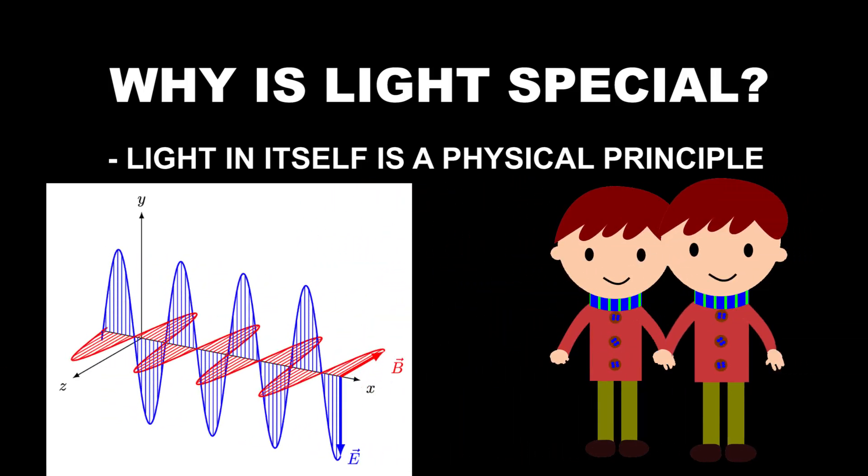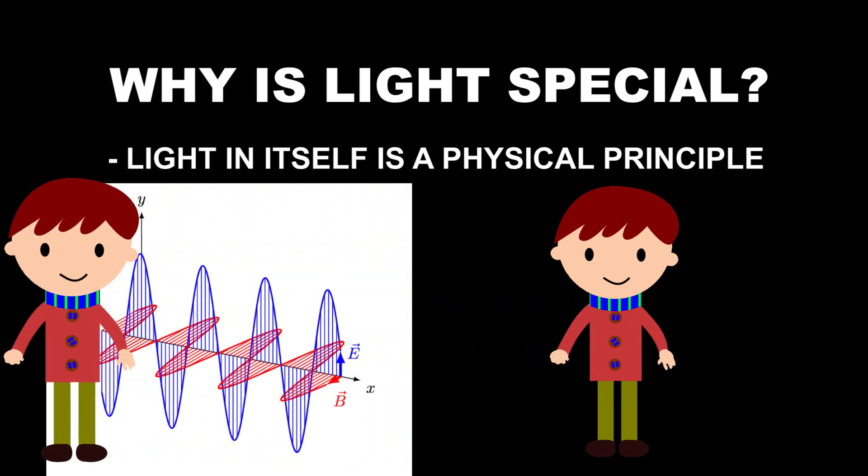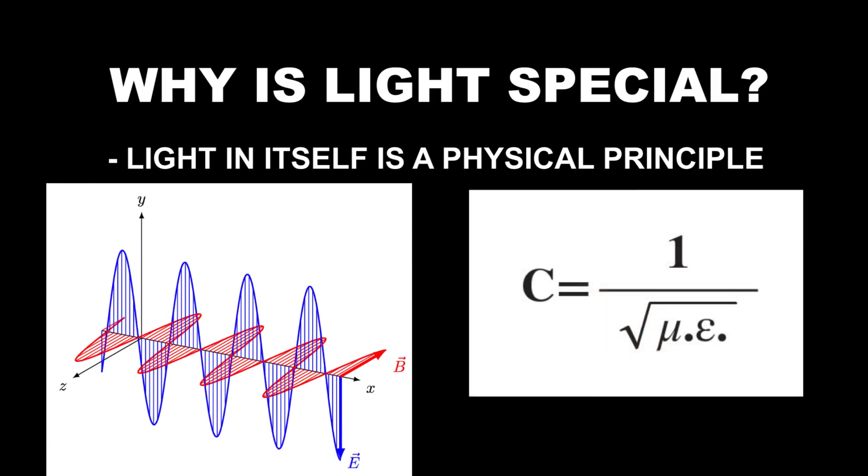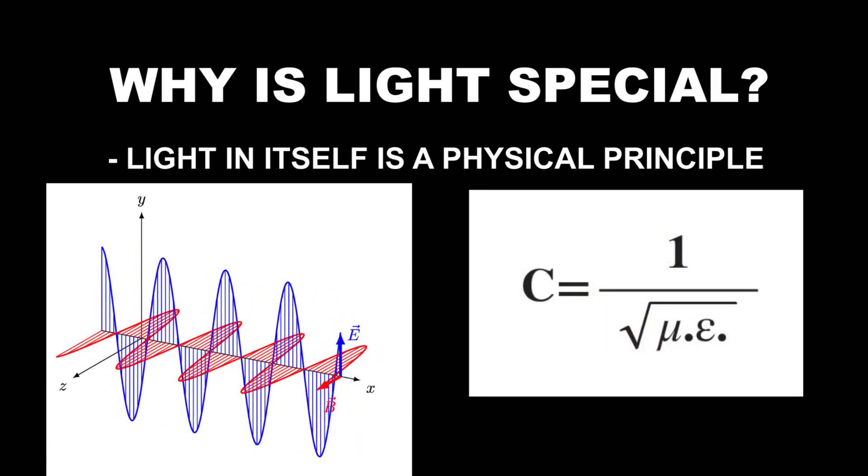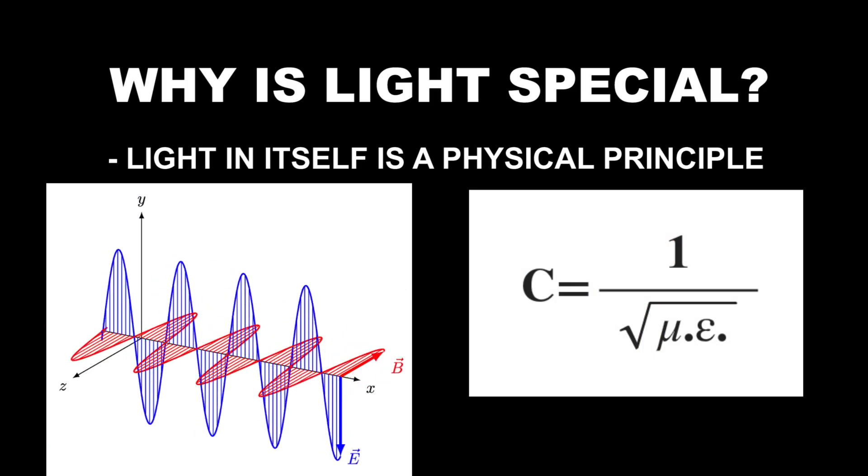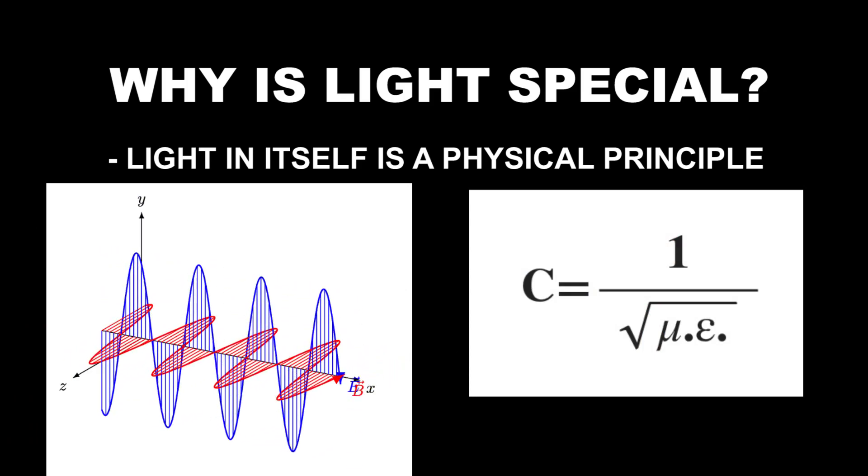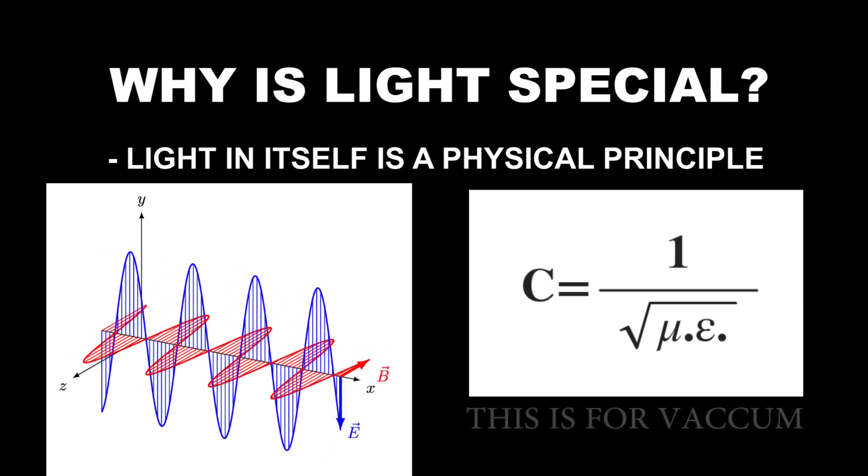This should always be same, irrespective of the velocity of the observer who is observing it. C will always be equal to 1 upon under root of mu nought, epsilon nought. Where mu nought is the permeability of free space and epsilon nought is the permittivity of free space. Keep in mind that we are talking about free space, that means vacuum.